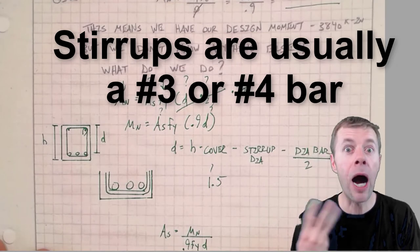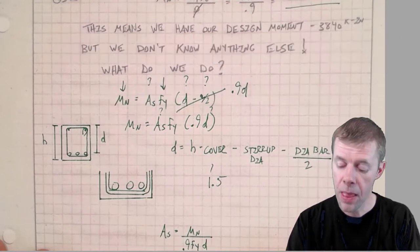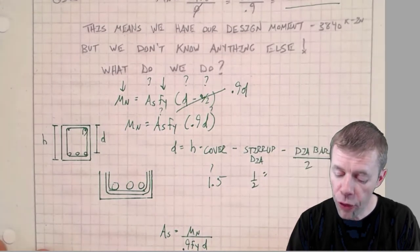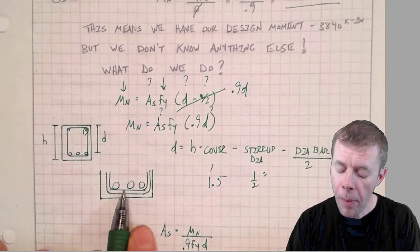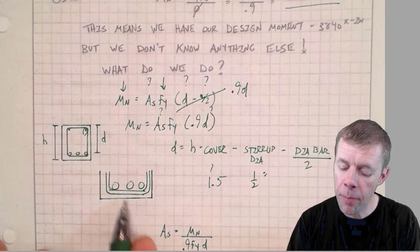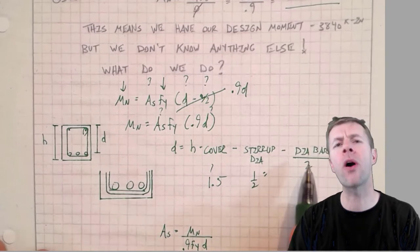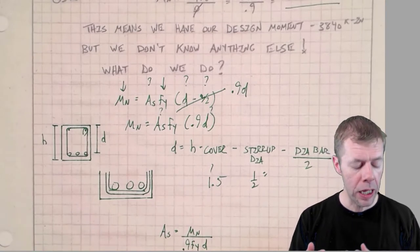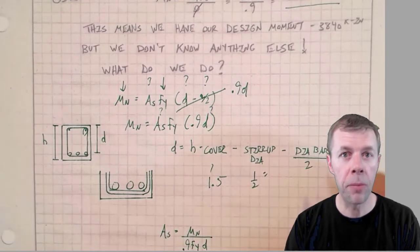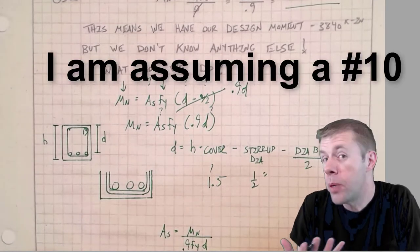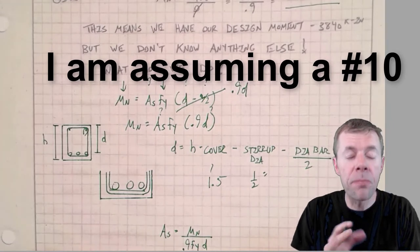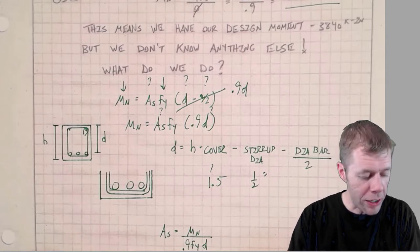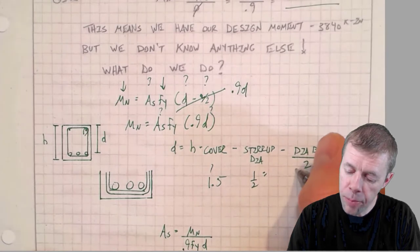My stirrup, what's my stirrup size? Well most people know I usually either use a number 3 or number 4 stirrup. I'm gonna use a number 4 because it's conservative, and a number 4 is a half inch diameter bar. What size bar should I assume? I could assume any size bar I want, but I'm going to assume a number 10 bar.